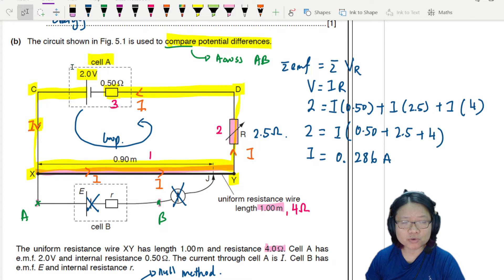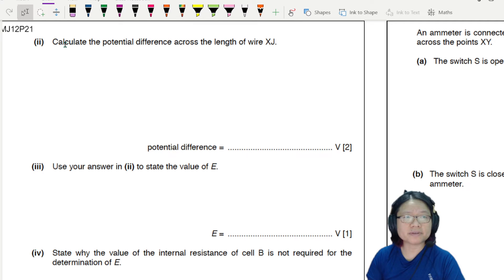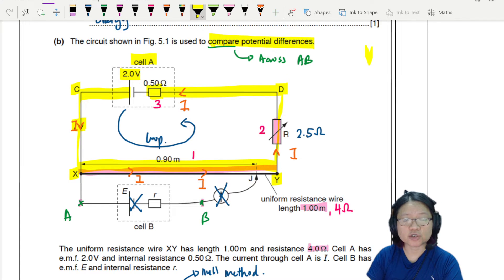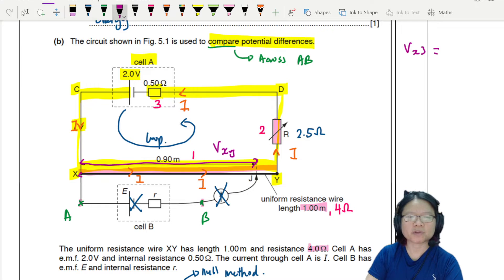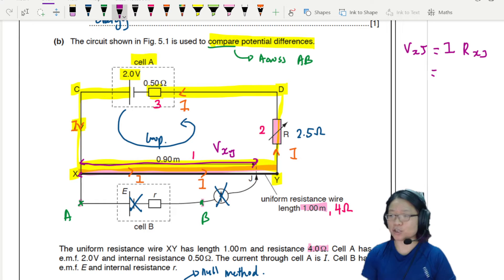V equal to IR. In this closed loop, the energy supplier is 2, the energy user is 0.5, 2.5, and 4. Let's move on to the next part. Part 2. Calculate the potential difference across the length of the wire XJ. So let's look at the circuit. What I'm looking for is the potential difference across the length XJ. So XJ is essentially this 0.90 meter. Let's use a bit of logic. I know VXJ can be calculated using I, the resistance from X to J. I already have I. I found it in the previous part. So what I actually just need is the resistance from X to J.